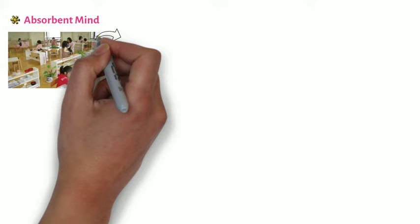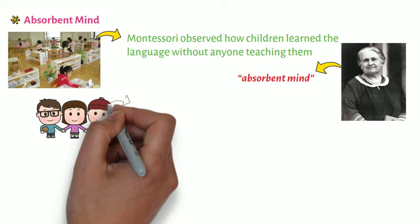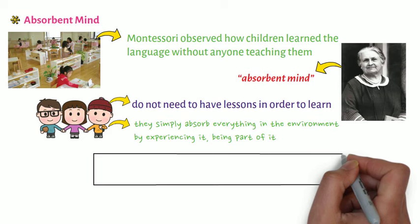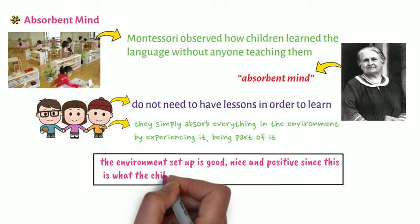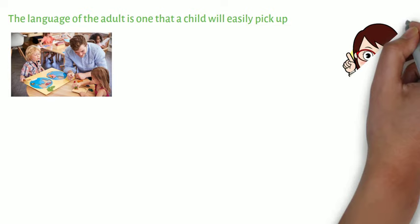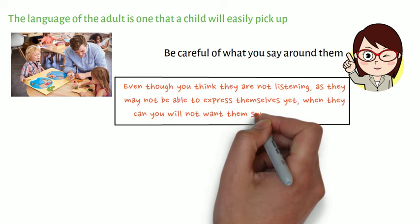On absorbent mind. Montessori observed how children learn language without anyone teaching them — this sparked her idea for the absorbent mind. Children under the age of three do not need to have lessons in order to learn; they simply absorb everything in the environment by experiencing it and being part of it. It is therefore important that the environment set up is good, nice, and positive since this is what the child will absorb whether he chooses to or not. The language of the adult is one that a child will easily pick up, so be careful of what you say around them. Even though you think they are not listening, when they can express themselves, you will not want them swearing back at you.